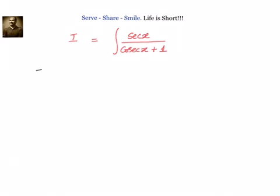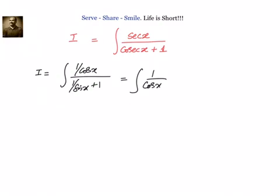We will try to convert this into sine and cos. After that, we will see how we can move forward. I can write it as i equal to integral of 1 by cos x divided by 1 by sin x plus 1, and we have dx.